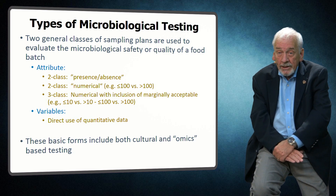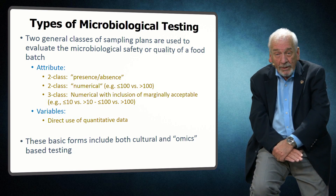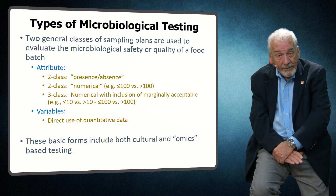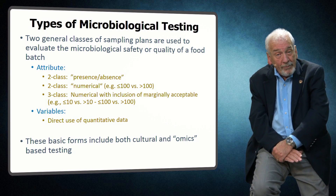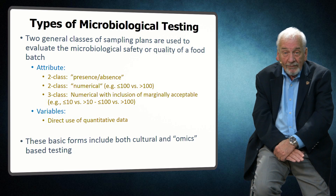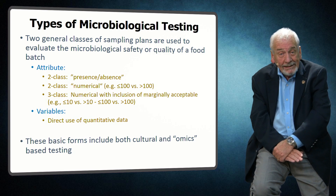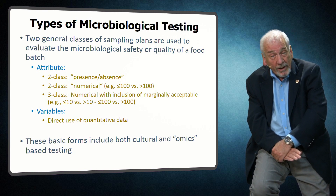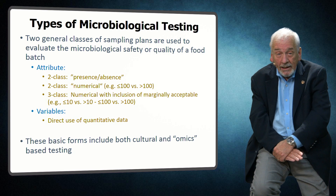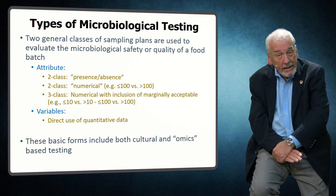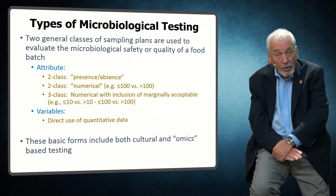The second type of two-class attribute sampling plans involves the use of quantitative data that have been stratified into acceptable and non-acceptable levels. This is often used in conjunction with indicator microorganisms such as coliforms, generic E. coli, or mesophilic aerobic plate counts.